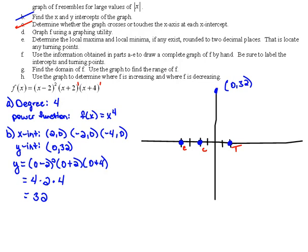We're down to part D on this that says graph F using a graphing utility. And then the next part is going to ask us to find the local maxima and minima, if any exist. We're going to round it to two decimal places, which is the same thing as saying find the turning points.